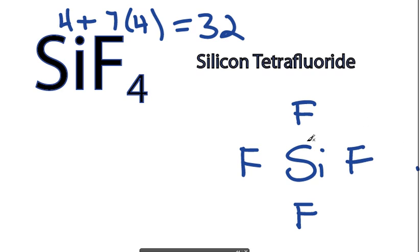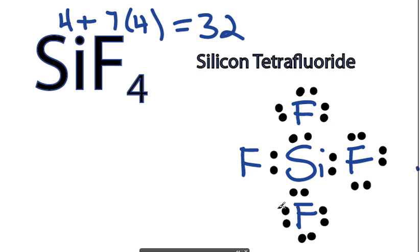So we'll take and put 2 electrons between each one of these to form a chemical bond. So we've used 8, and we have 32. Counting as we place the remaining electrons: 8, 10, 12, 14, 16, 18, 20, 22, 24, 26, 28, 30, and then 32. So we've used the 32 valence electrons.